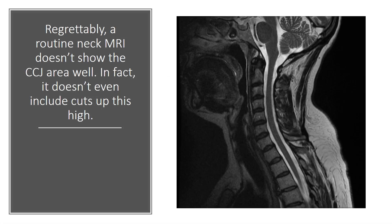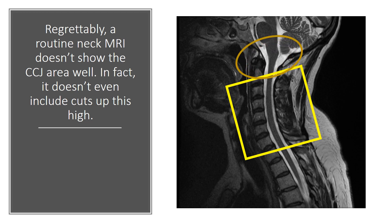Regrettably, a routine neck MRI doesn't show the CCJ area well. In fact, it doesn't even include cuts that go high up into that area. This is the block that they usually acquire, kind of from C2 down to T1. The CCJ is above there, so they're not getting much information about the CCJ in a routine MRI — they're just not looking in the right place. It's on there in some of the cuts, but in other cuts, it's not at all.